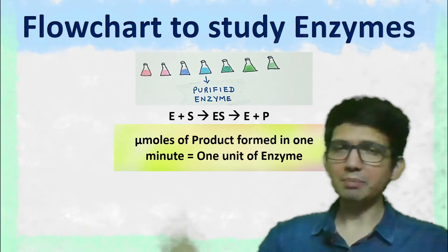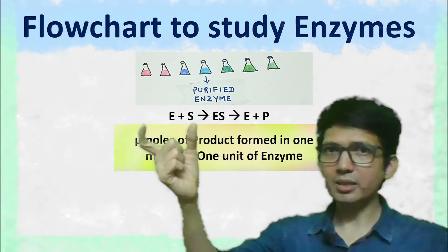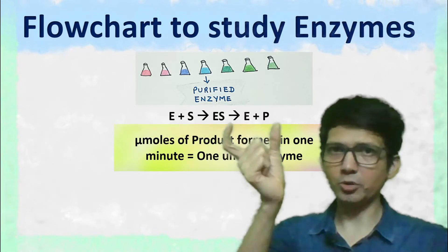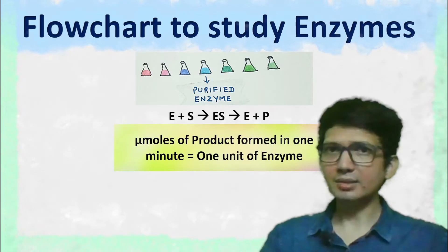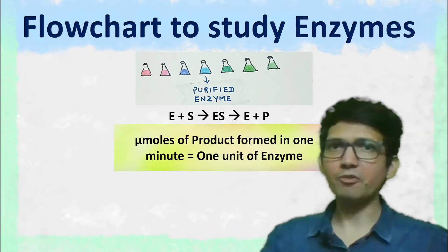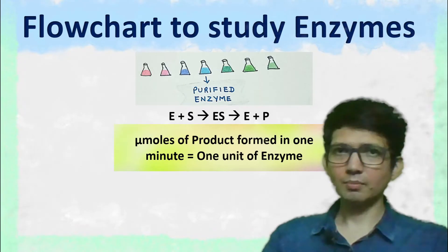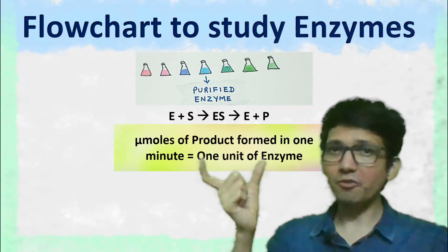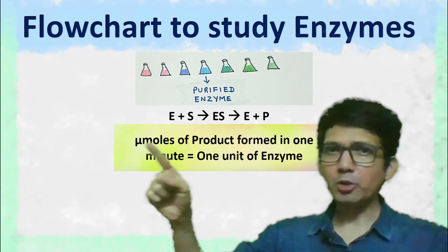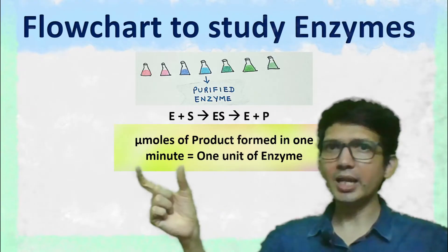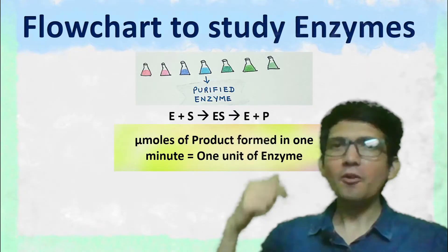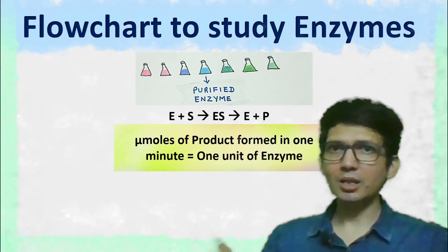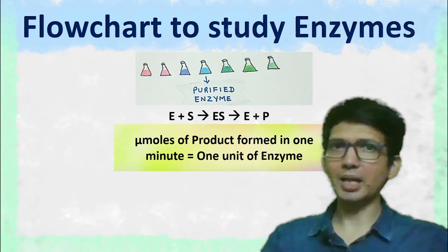The simplest study can be mixing the enzyme with the substrate and measuring the amount of product formed in unit time. This will give us information regarding units of enzyme present after purification. This is because one unit of enzyme is the micromoles of product formed in one minute. So by measuring the concentration of product formed per unit time, the units of enzyme can be calculated.